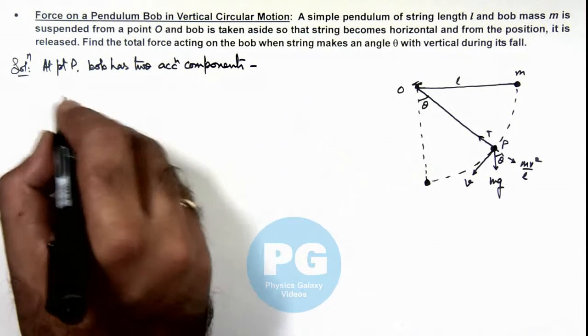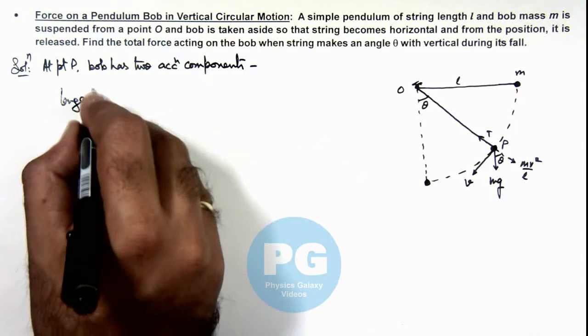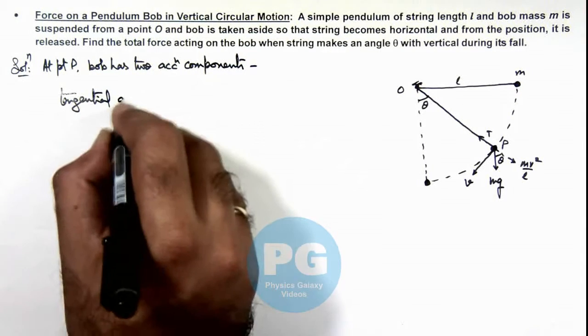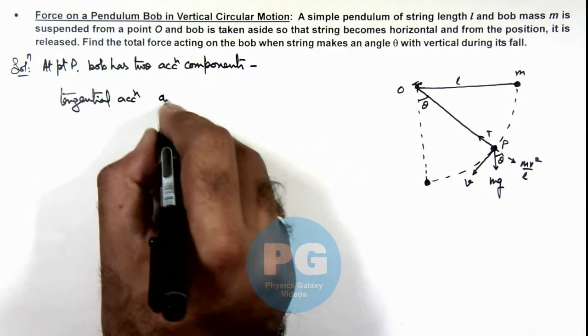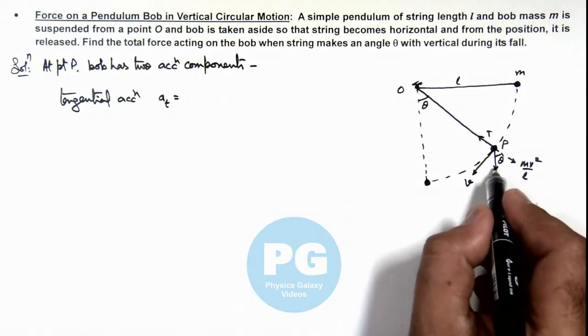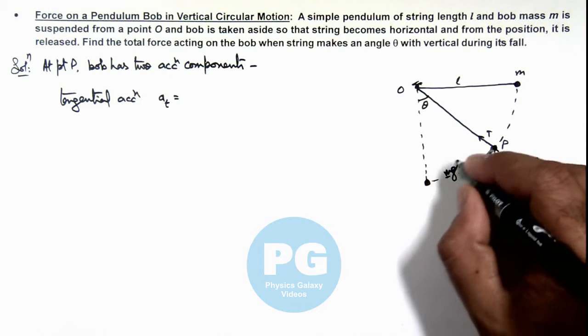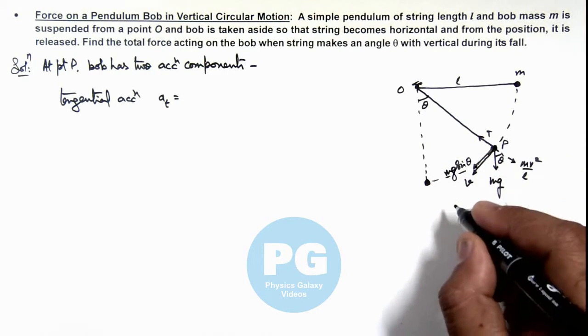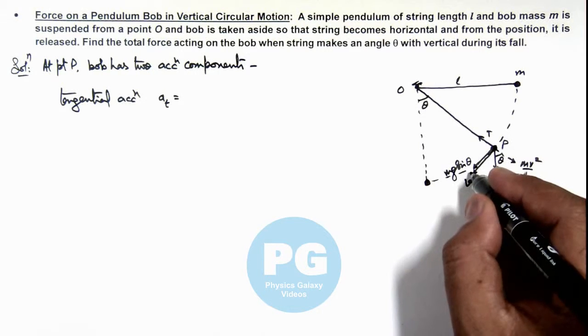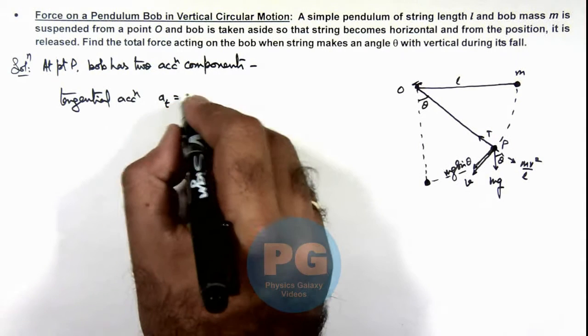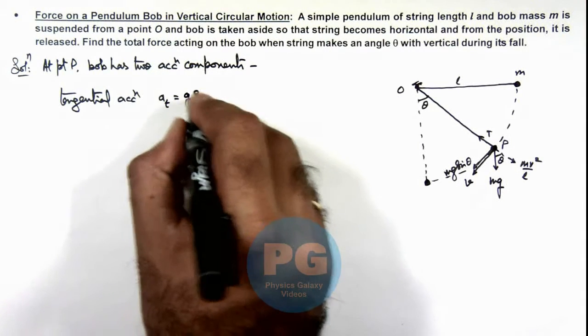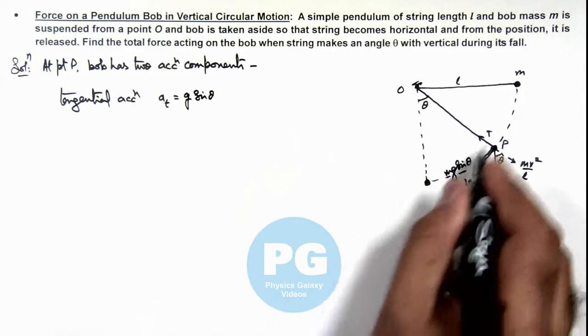Which are given as tangential acceleration a_t, which is due to the component of weight acting along the tangential direction, which is mg sin theta. And due to mg sin theta, it is accelerating with tangential force upon mass.